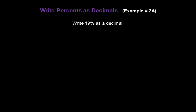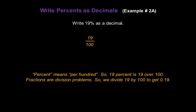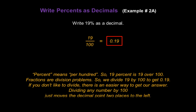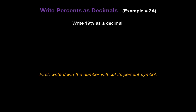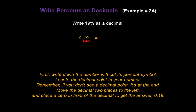Now let's write percents as decimals. Write nineteen percent as a decimal. Percent means per hundred, so nineteen percent is written as nineteen over one hundred. Since fractions are division problems, nineteen divided by one hundred is zero point one nine. There is also an easier way: dividing any number by one hundred just moves the decimal point two places to the left. Write down the number without the percent symbol — nineteen. Locate the decimal point, and if you don't see one, put one at the end. Move the decimal two places to the left, and place a zero in front to get zero point one nine.